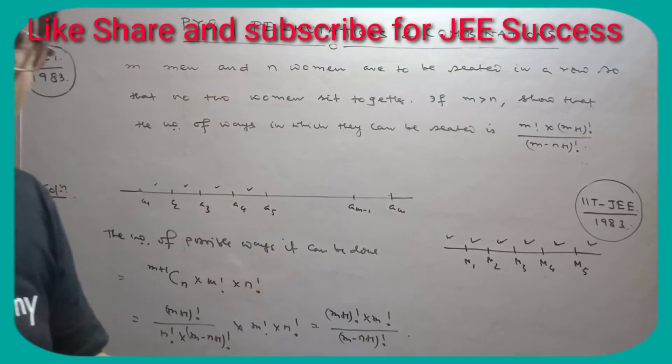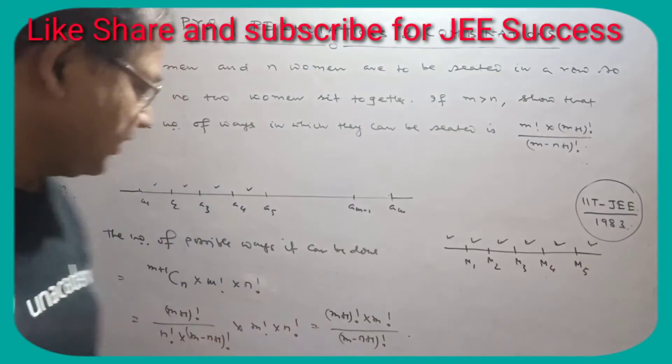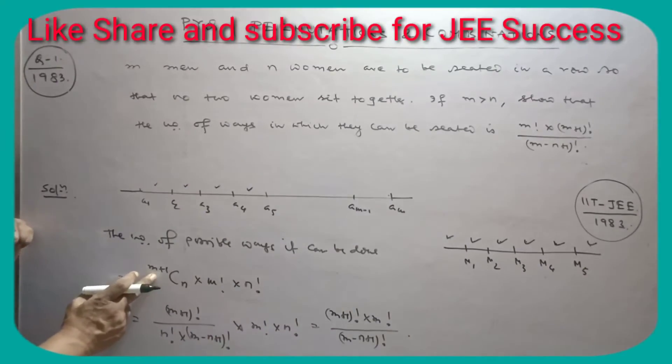So we have M plus 1 gaps in which we need to fill N women. That means in N plus 1 gaps we fill N women. In how many ways can this be possible?